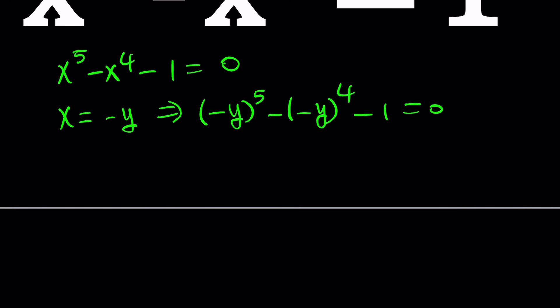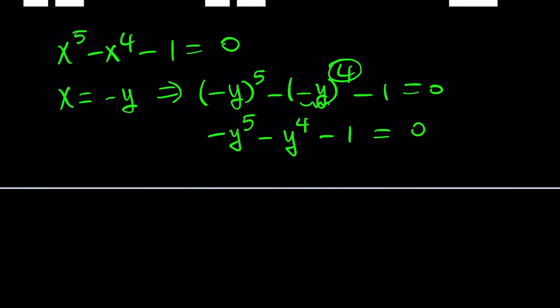So this will be negative y to the fifth. But in the case of even powers, the negative is going to disappear, so it's going to be positive. But there's a minus sign, so it's going to be minus y to the fourth minus one equals zero. Now let's multiply both sides by negative one to get y to the fifth plus y to the fourth plus one equals zero.